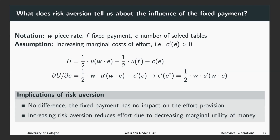Now we want to look for the optimal level of effort provision. To get this, we take the first derivative with respect to the number of solved tables. We want to maximize utility by choosing the right number of solved tables. What you first notice is that the fixed payment has no influence on this first derivative. The first derivative is just one half times W times U prime of W times E minus the marginal costs of exerting effort E. So this means the optimal effort provision is independent of the fixed payment.